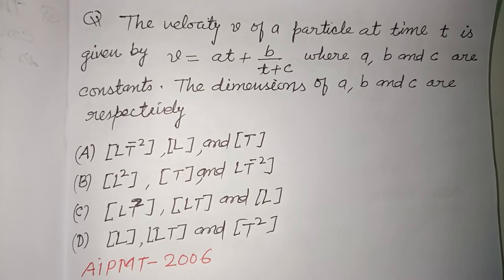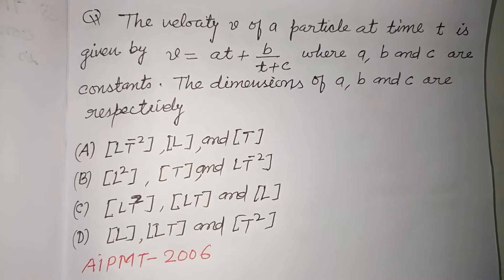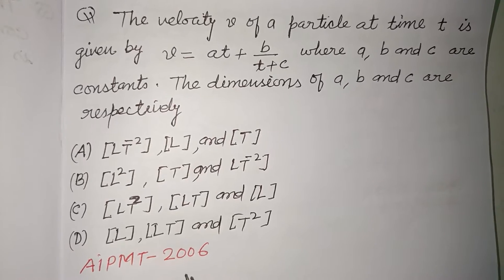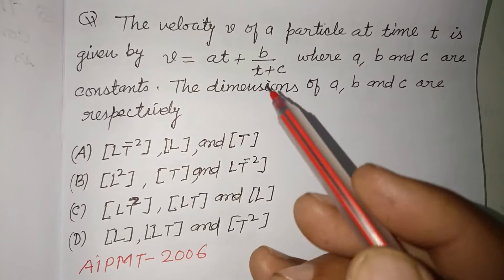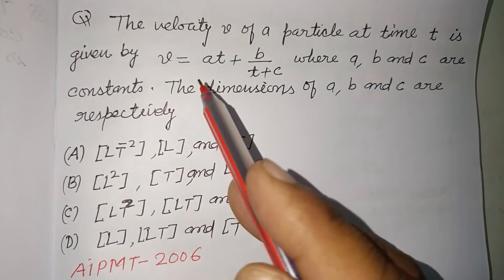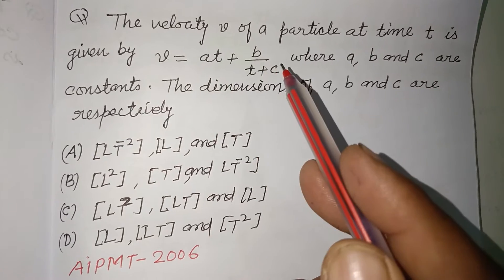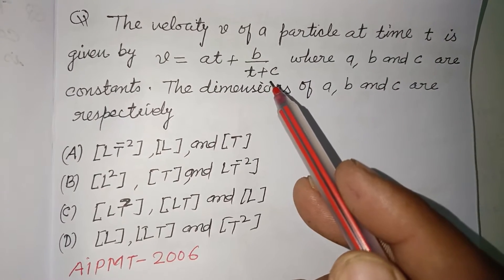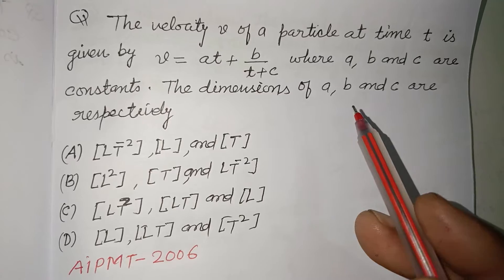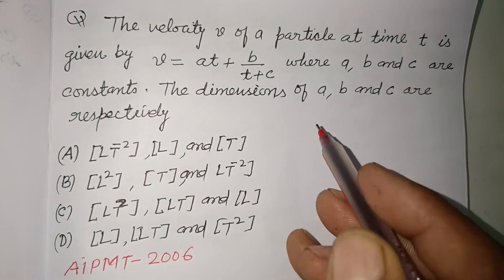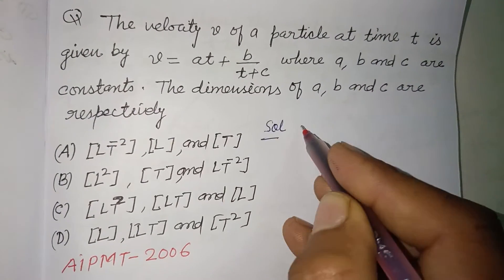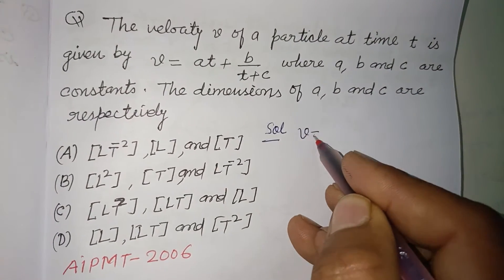Hello viewers, welcome to this YouTube channel. This is a question from All India PMT 2006. The velocity v of a particle at time t is given by v equal to at plus b over t plus c, where a, b, c are constants. The question asks for the dimensions of a, b, c respectively.